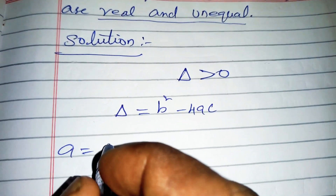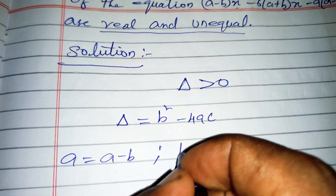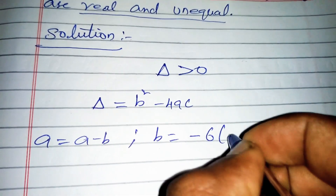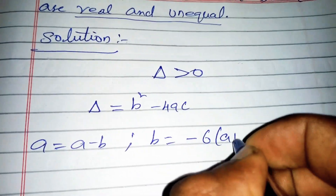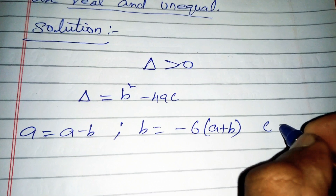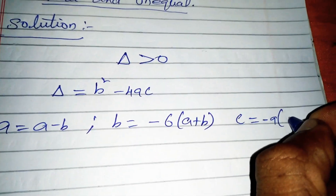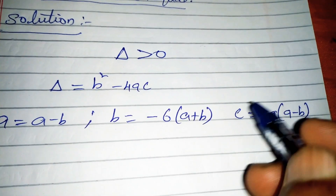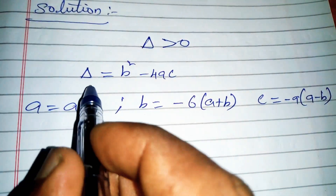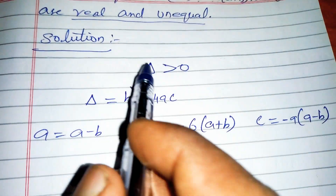From the equation, the coefficient of x squared is a equal to (a minus b), the coefficient of x is b equal to minus 6(a plus b), and the constant term is c equal to minus 9(a minus b). Now substituting these values into the discriminant formula.